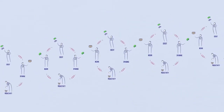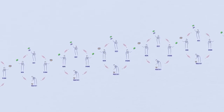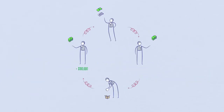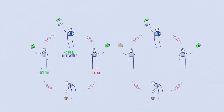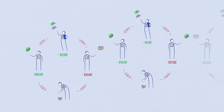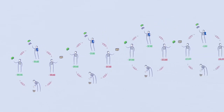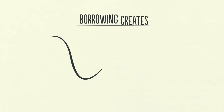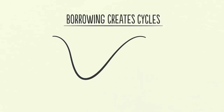In an economy with credit, we can follow the transactions and see how credit creates growth. Suppose you earn $100,000 a year and have no debt. You are creditworthy enough to borrow $10,000 on a credit card, so you can spend $110,000 even though you only earn $100,000. Since your spending is another person's income, someone is earning $110,000. The person earning $110,000 with no debt can borrow $11,000, so he can spend $121,000 even though he has only earned $110,000. By following the transactions, we can begin to see how this process works in a self-reinforcing pattern. But remember, borrowing creates cycles, and if the cycle goes up, it eventually needs to come down.